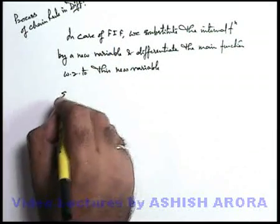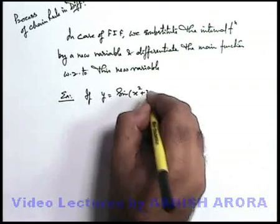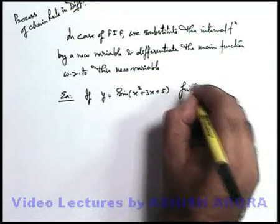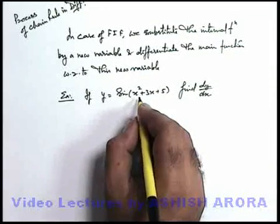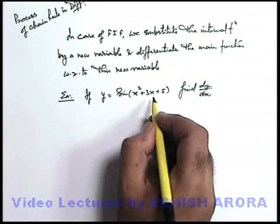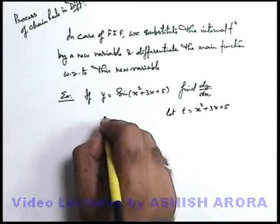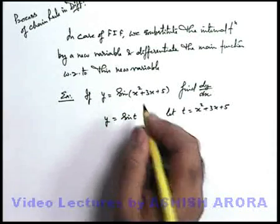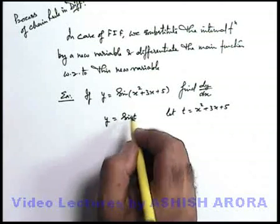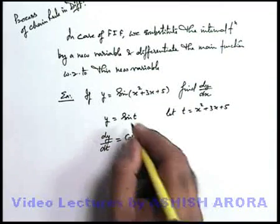Let's discuss with an example. Say we are given with y = sin(x² + 3x + 5), which we have taken on the previous page, and we are required to find dy/dx. Here, in the main trigonometric function the internal function is an algebraic function. So I will substitute this internal function by a new variable: let t = x² + 3x + 5. So if I put t here, this will become y = sin(t). Now you can see y is expressed in the form of a simple trigonometric function of variable t. So here I can differentiate y with respect to t, giving dy/dt = cos(t) by the direct formula of trigonometric differentiation. And since we have the value of t in terms of x, we can differentiate it with respect to x, giving dt/dx = 2x + 3.